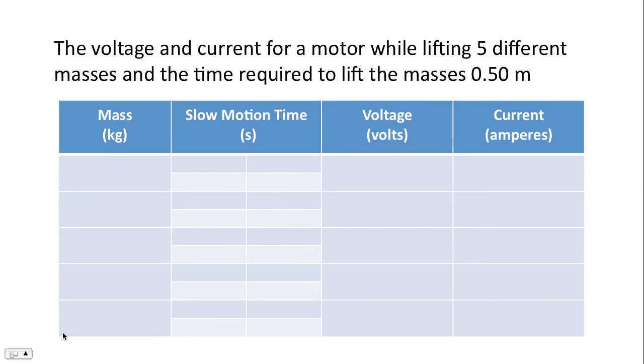And here's the table I'd like you to complete today. Please copy the title and the units for the headings. Notice the headings: Mass, slow motion time, voltage and current. Notice for slow motion time, I'd like you to complete four trial runs.